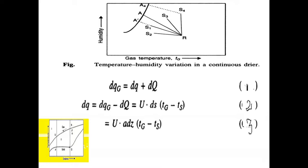Referring to the temperature profile figure from the previous slide, capital R denotes the condition of air entering zone two. When drying takes place adiabatically without any heat loss, the variation of gas temperature and humidity is along the adiabatic saturation line R to S1.